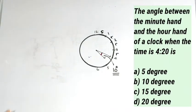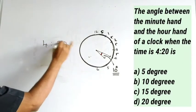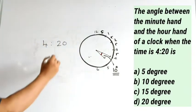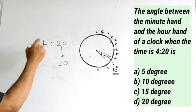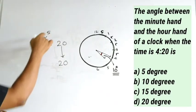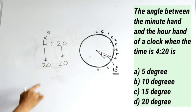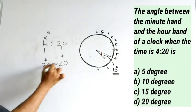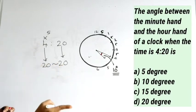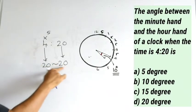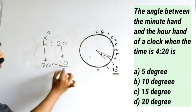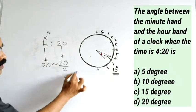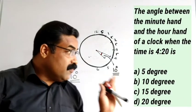Let me repeat that step once again. The time is 4:20. The minute 20 is written as it is, and the 4 is multiplied by 5 to give 20. The difference between 20 and 20 is zero. If both numbers are equal, just divide this number by 2 to get the answer — 10 degrees is the correct answer.